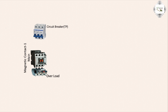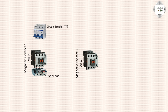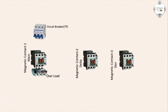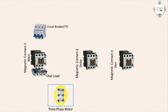Main magnetic contact for delta connection using the magnetic contact — magnetic contact two or third magnetic contact for star connection. Three-phase motor terminal loop, and timer using 8-pin terminal. Pin 7 or 2-pin timer for voltage supply.